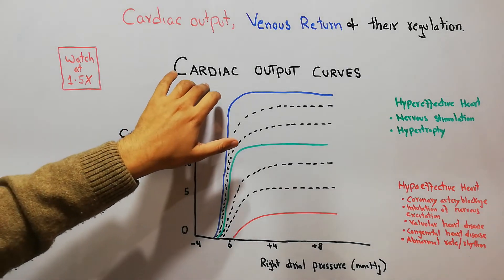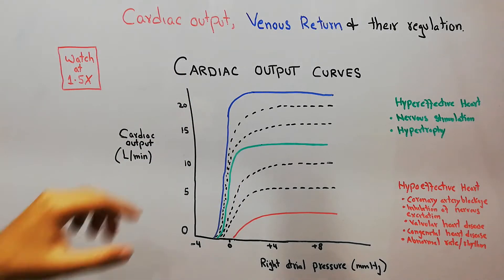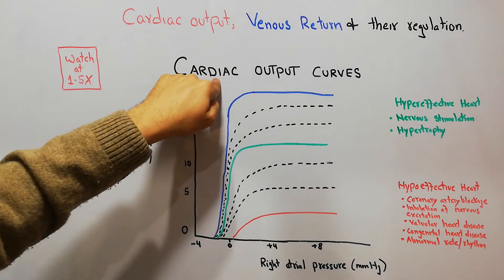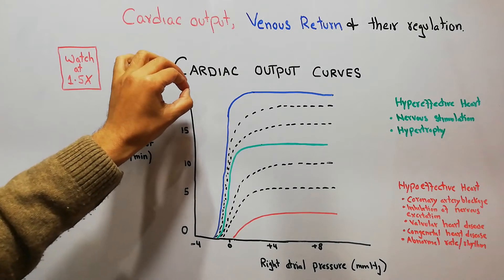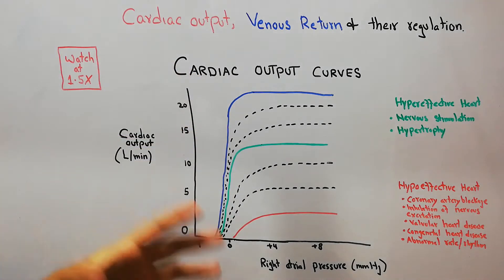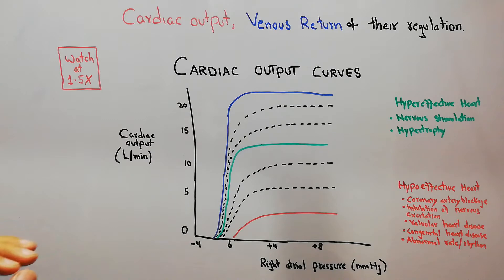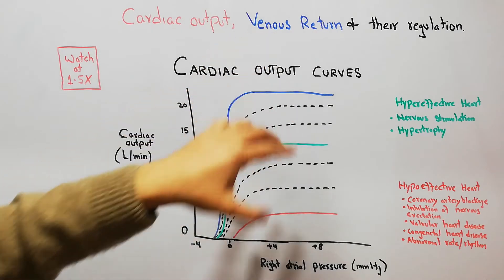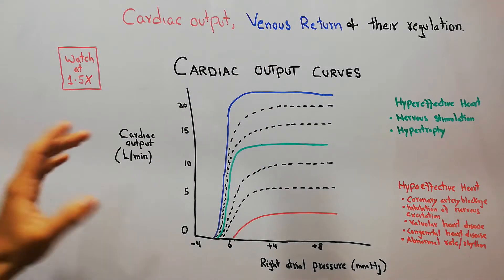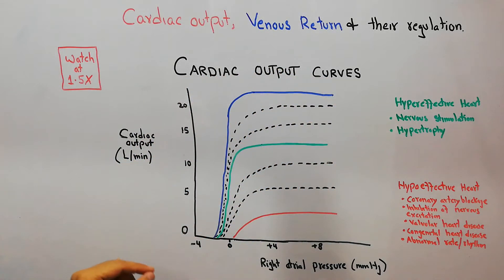We have discussed the Frank-Starling mechanism, which states that cardiac output is dependent upon venous return — the heart will pump whatever amount of blood is returned to it. However, the Frank-Starling law has limitations: the heart can pump whatever amount returns via venous return, but there is a ceiling point after which there is a plateau. In the cardiac function curves, we are going to focus on that limitation of the heart.